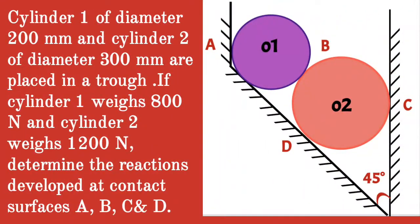Given question: Cylinder 1 of diameter 200 mm and Cylinder 2 of diameter 300 mm are placed in a draft. If Cylinder 1 weighs 800 N and Cylinder 2 weighs 1200 N, determine the reactions developed at contact surfaces A, B, C and D.